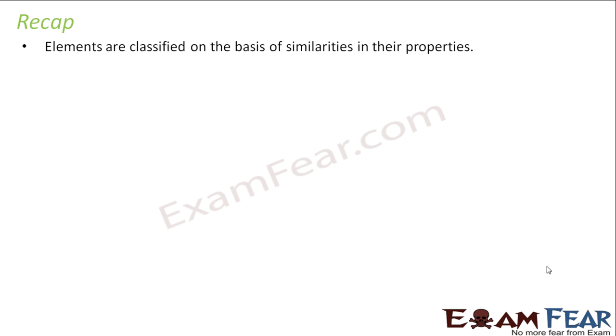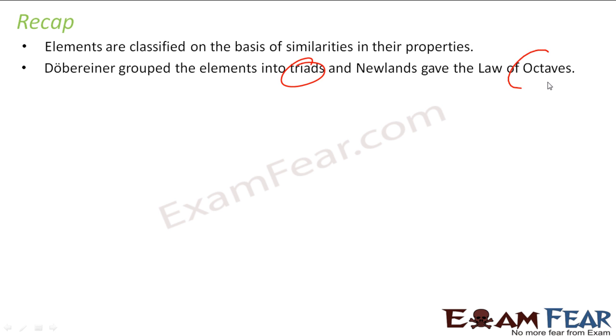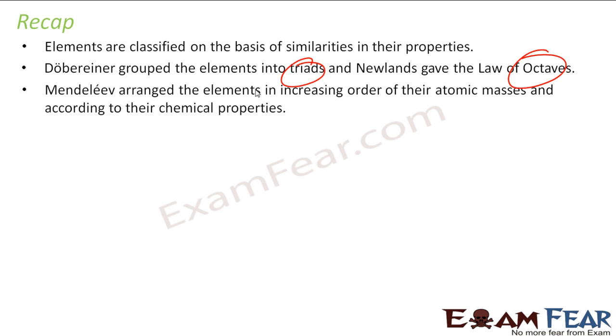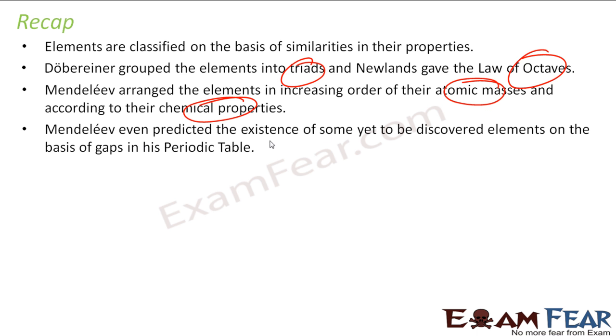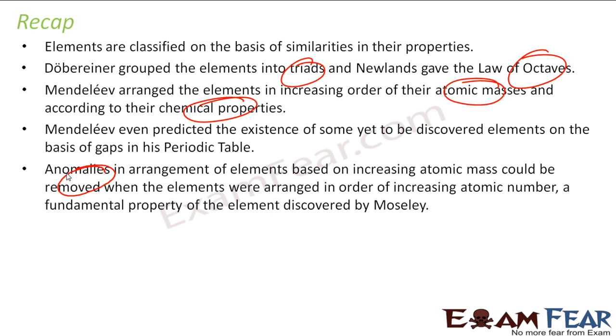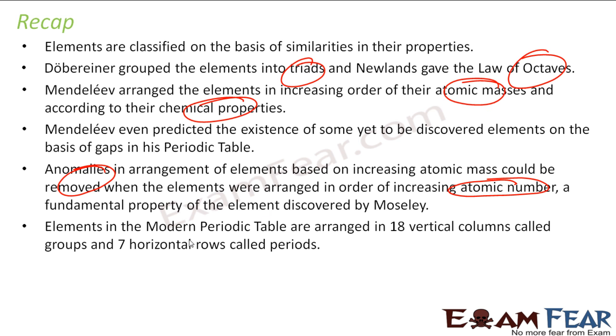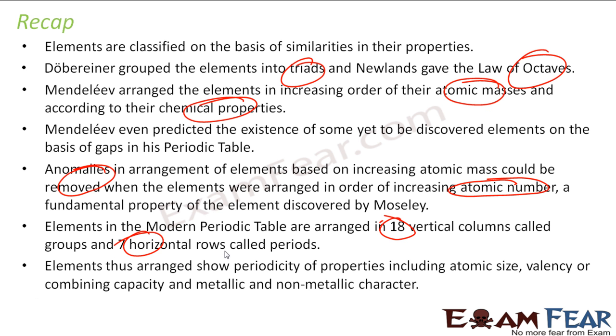Let's do a recap. Elements are classified on the basis of similarity in the property. Dobereiner explained or grouped the elements into triads and Newlands into law of octaves. Mendeleev arranged elements in the order of increasing atomic masses and also based on chemical property. He predicted the existence of some elements which were not even there at that time. There were some anomalies in the basis of ordering of atomic masses which could be removed when Moseley proposed atomic number. And in modern periodic table, we have 18 vertical columns and seven horizontal rows called periods. And elements thus arranged show periodicity of properties including atomic size, valency, combining capacity, metallic, non-metal character, all these things. It shows the periodicity in these properties.